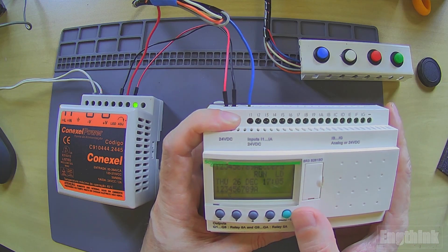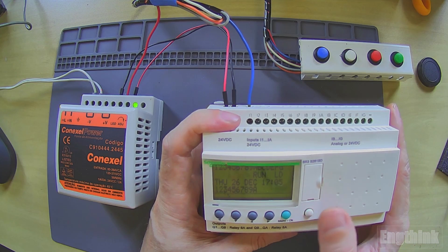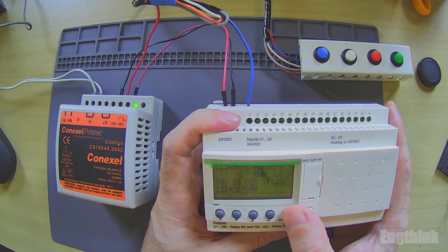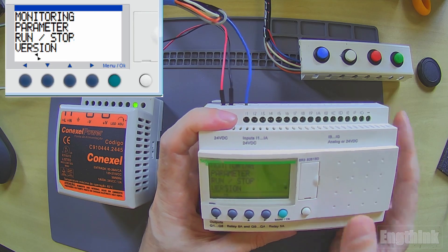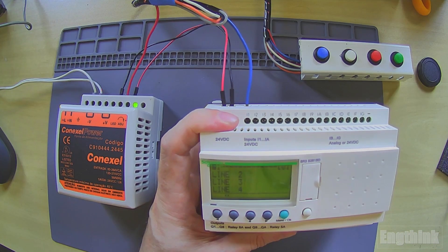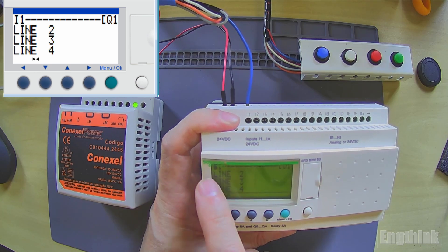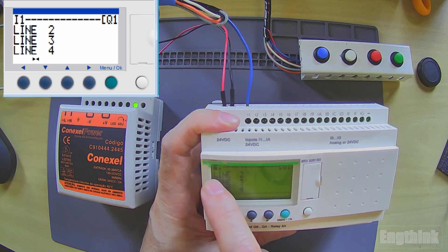Let's see what we have inside our program. Let's navigate. First we need to press the green button and then we go to monitoring. We have only one line programmed.